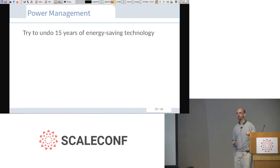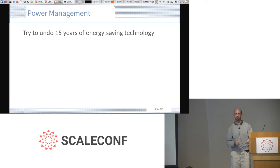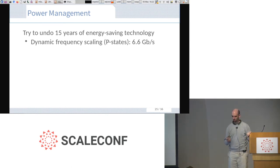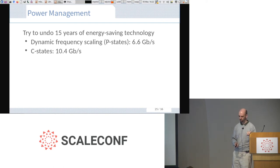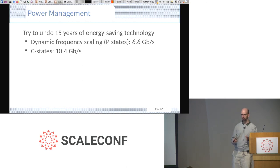One problem is power management. I am unfortunately responsible for some global warming because power management is not your friend when you want to drop no packets — it's designed to put the computer to sleep and wake it up as data rate climbs. Our traffic pattern is a box function: we turn the telescope on, the firehose opens, data flows, then we turn it off. That's not good for power management. Turning off dynamic frequency scaling gets you from 6.3 to 6.6 Gbps. Restricting C-states to C1 gets you up to 10.4 Gbps — a fully sustainable rate.